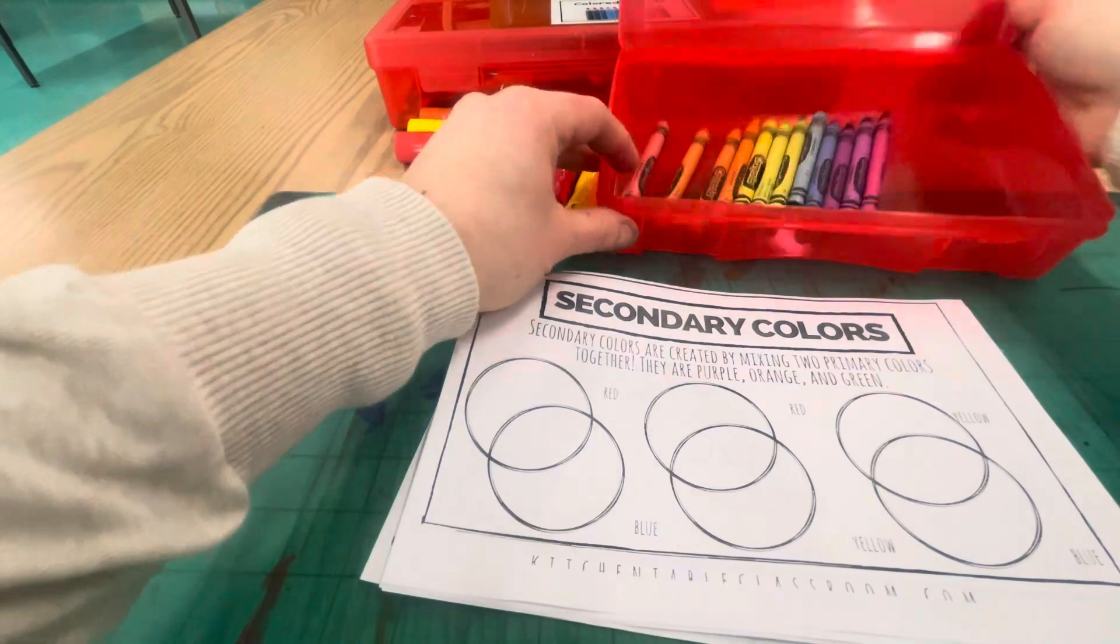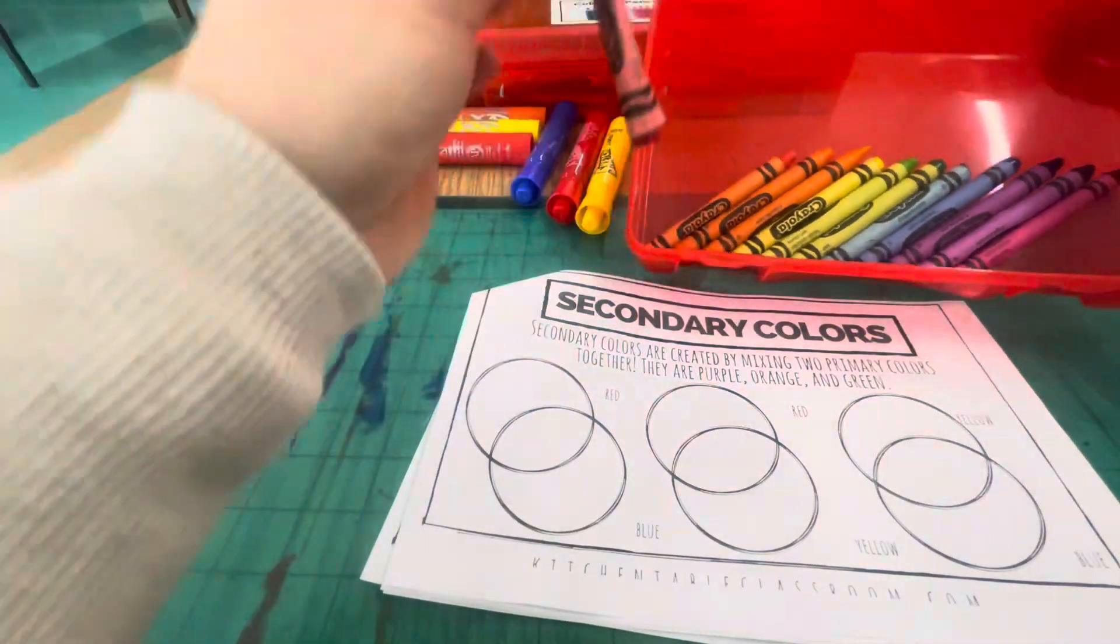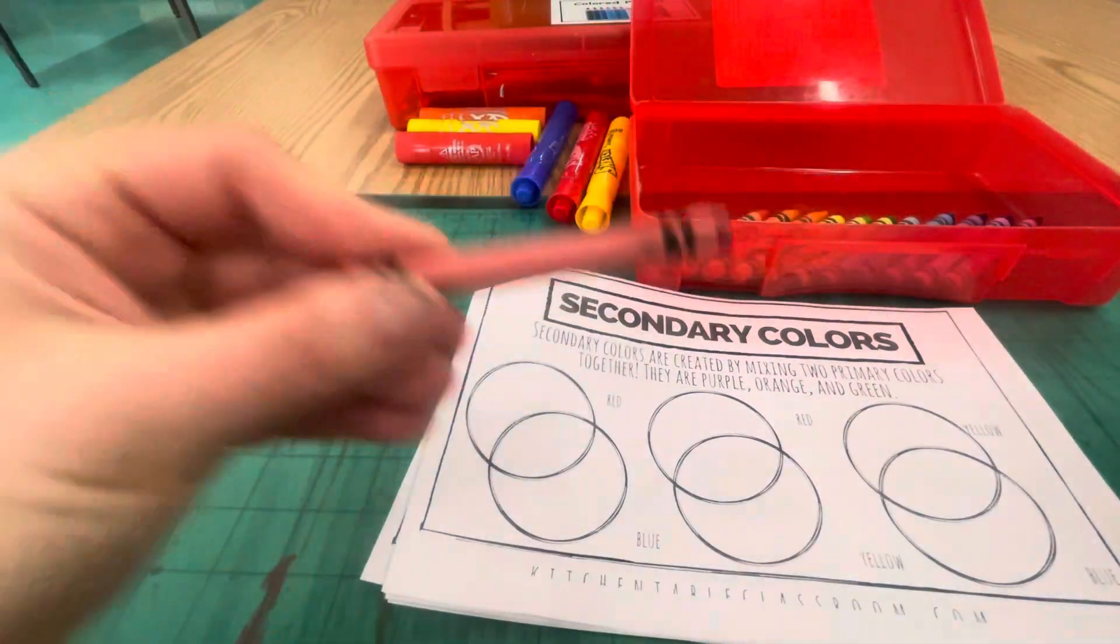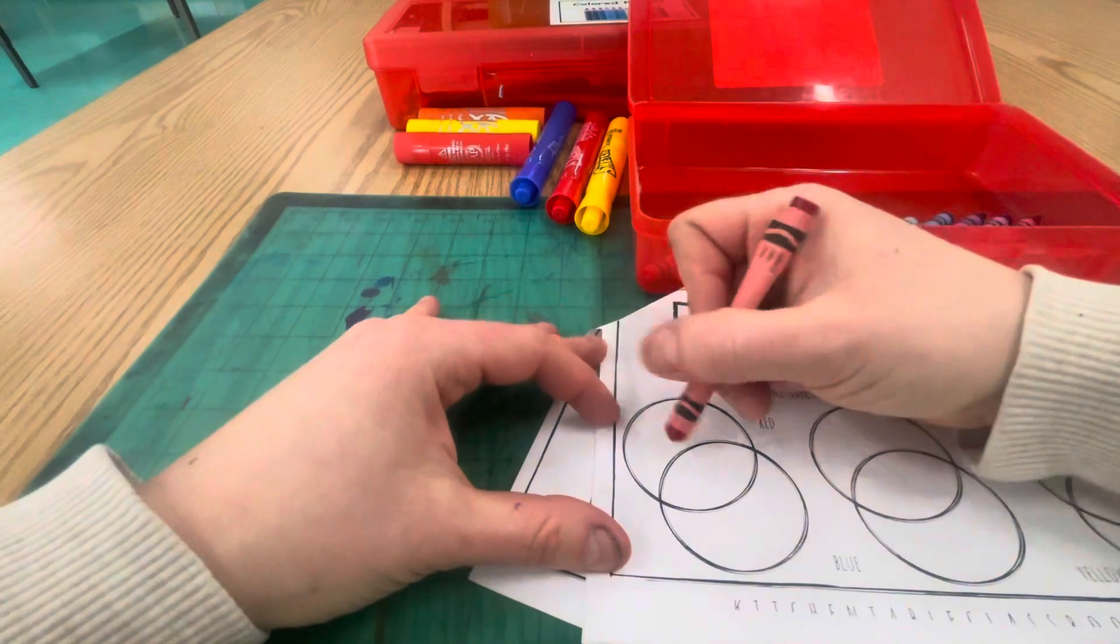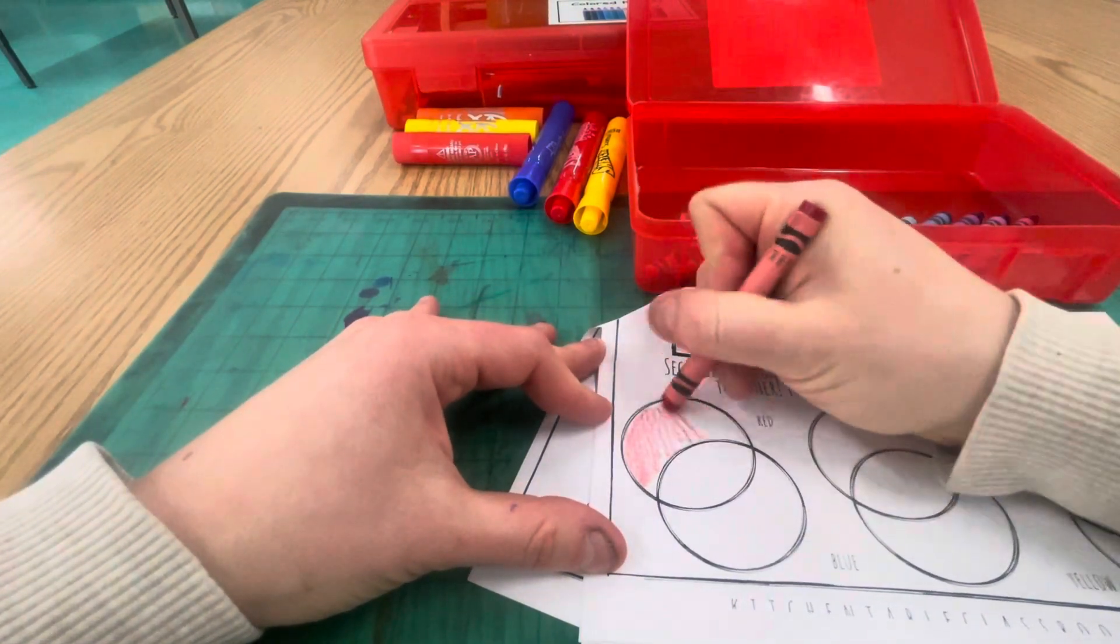I want you to use this crayon box because it has all the colors that you need. Make sure that you are looking at the label. Make sure you're getting red because that's what you need when you're coloring the red up here. That's all fine and well and good.